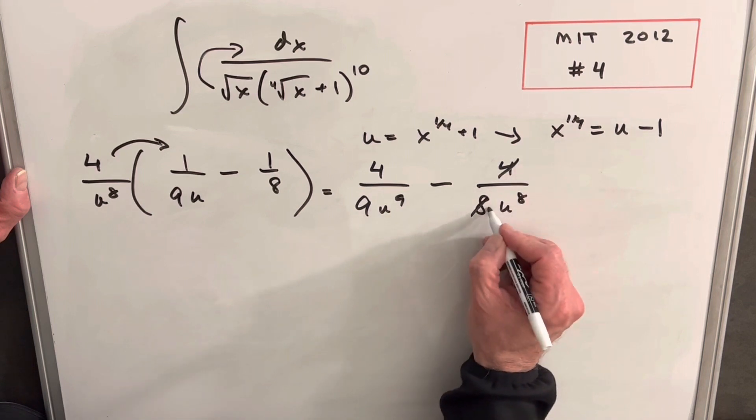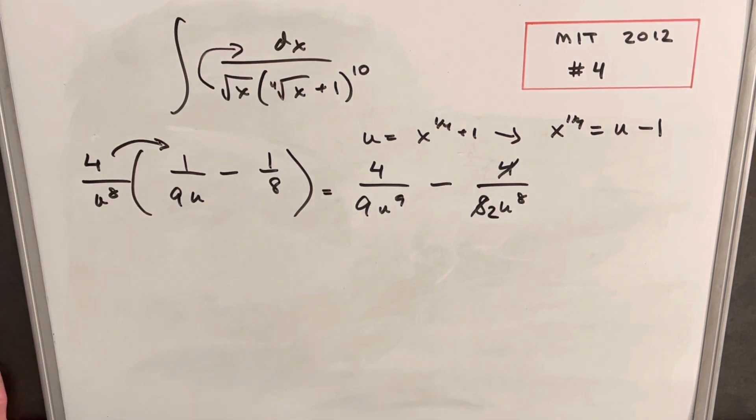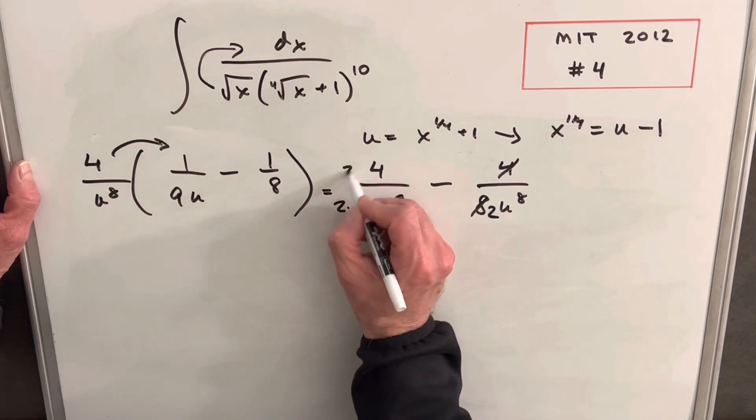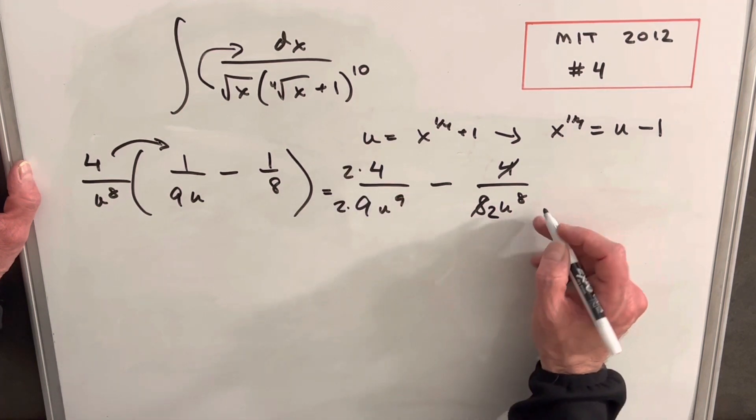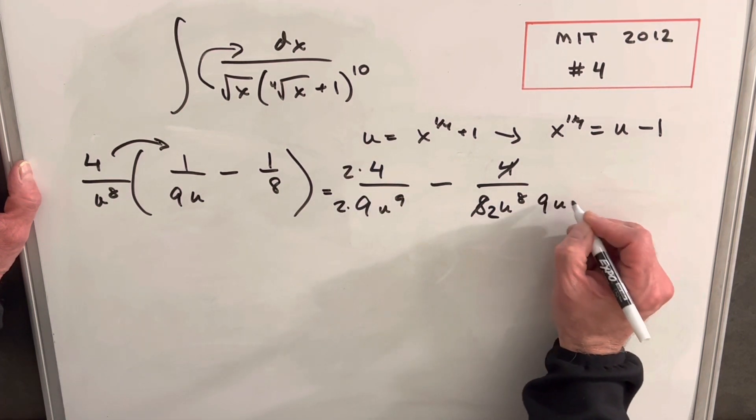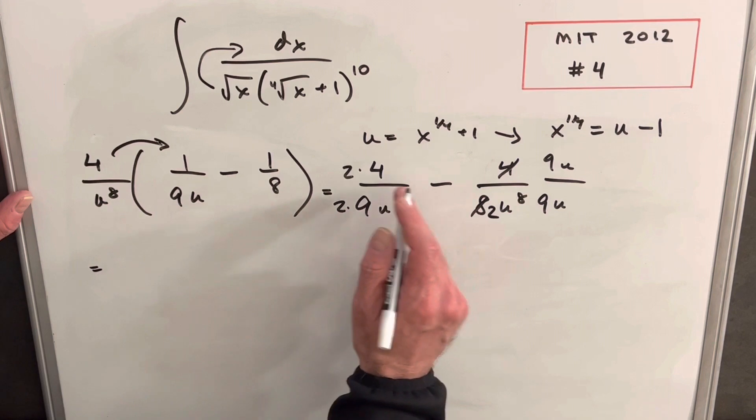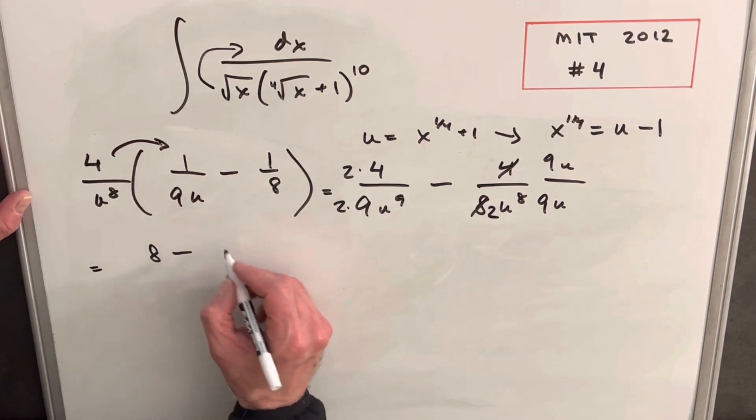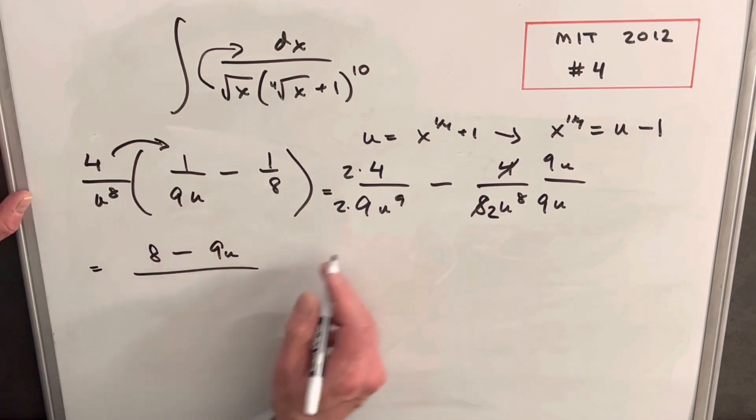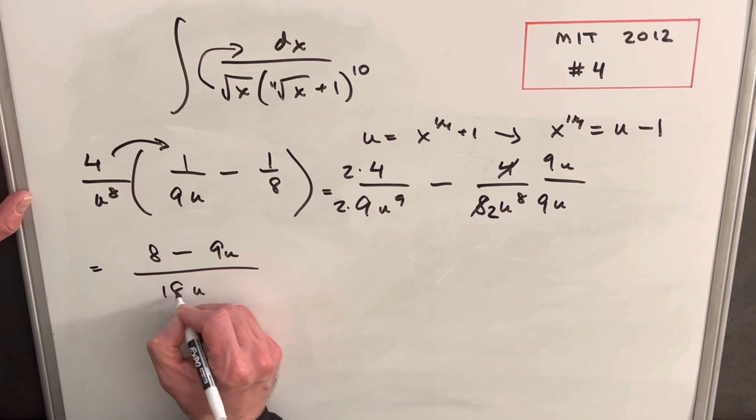We'll just cancel that and we'll have a two here. Then let's get a common denominator. So I'll multiply two over two here, and then here we'll multiply by nine u on top and bottom. So now we have a common denominator. Okay, so then multiplying, now we can combine these terms. We're going to have eight minus nine u over 18 u to the ninth.